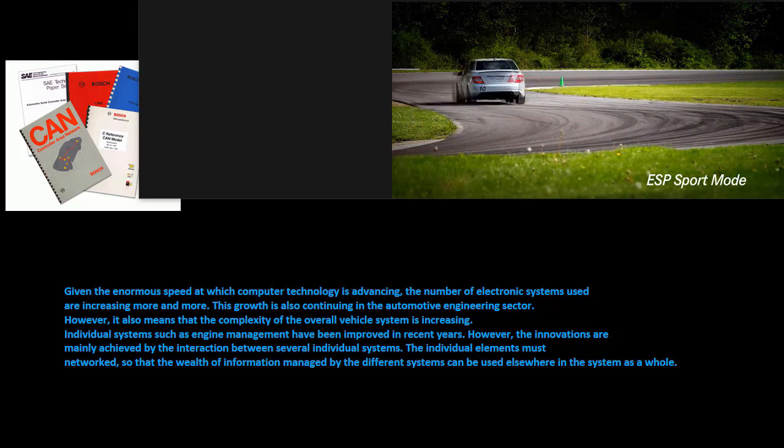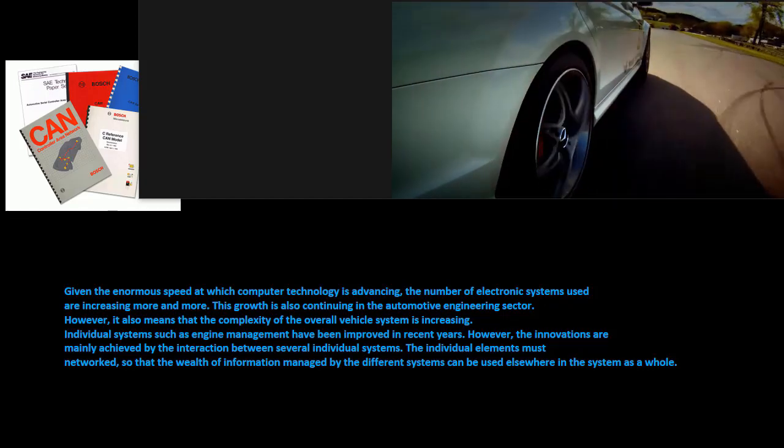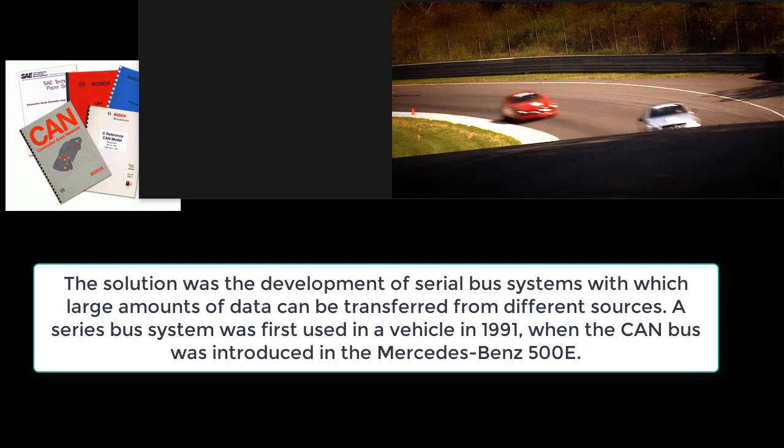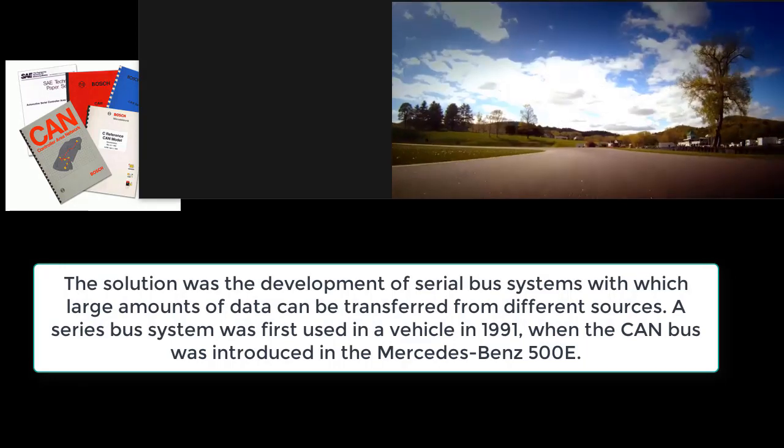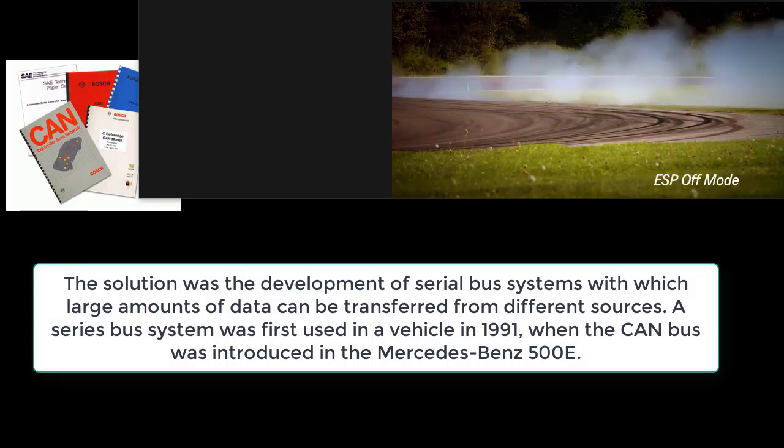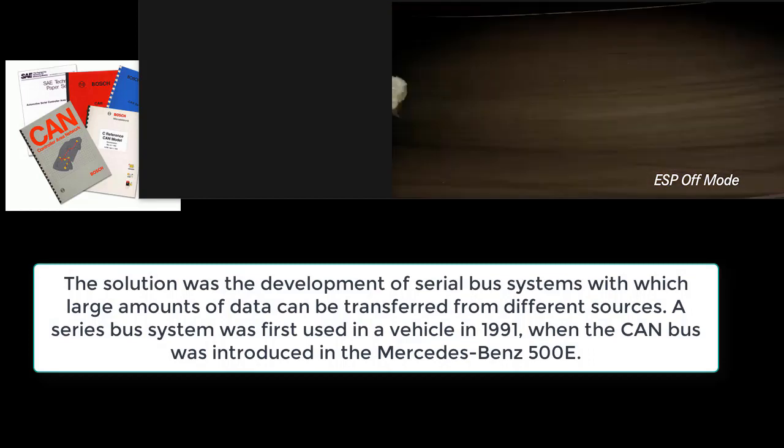The individual elements must be networked so that the wealth of information managed by the different systems can be used elsewhere in the system as a whole. The solution was the development of serial bus systems with which large amounts of data can be transferred from different sources. A series bus system was first used in a vehicle in 1991, when the CAN bus was introduced in the Mercedes-Benz 500E.